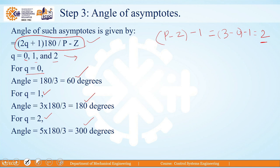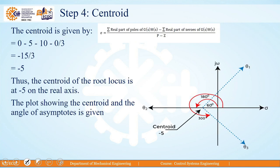The angles of asymptotes are the lines along which the root locus branches travel towards infinity — they are guiding lines. The three angles are 60°, 180°, and 300°, measured with respect to the positive real axis. These asymptotes are drawn at a point called the centroid, which we will now define.